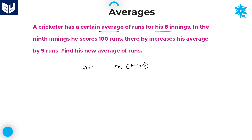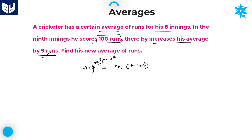Up to 8 innings, the average is x runs. In the 9th inning he scored 100 runs, and this increases his average by 9 runs. So the average before the 9th inning is x, and the average after the 9th inning is x plus 9.